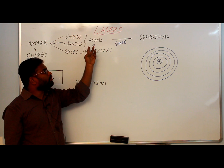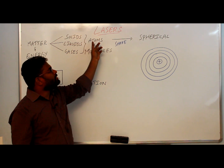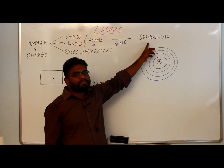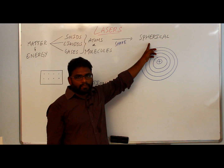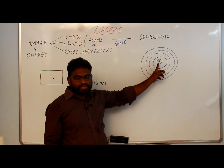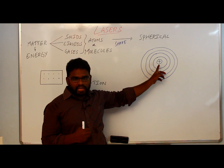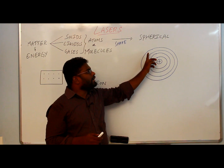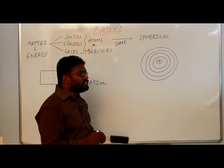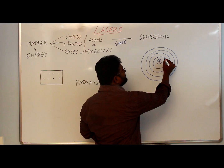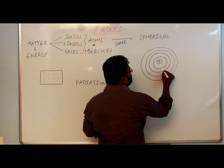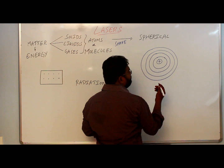The shape of an atom is a spherical one. The central part of the atom is known as the nucleus, which is positively charged. Electrons, which are negatively charged, revolve around the nucleus in orbits.